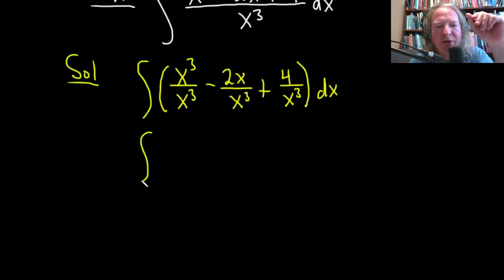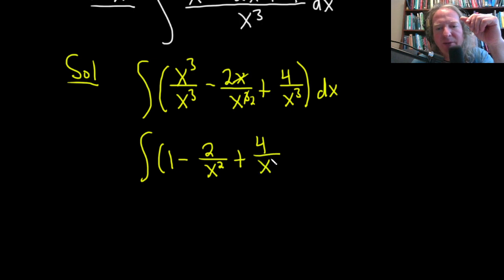So this is still the integral of x cubed over x cubed is 1 minus, here we're going to cancel this x with one of these, that's going to give us 2 over x squared, plus 4 over x cubed. And then we still have our dx.